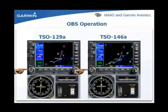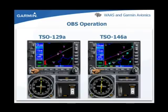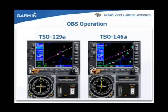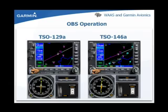Both the Classic and WAAS GNS units will enter OBS mode, enunciated by the green OBS above the OBS key. Prior to reaching the VOR for the hold, ATC amends the clearance with instructions to proceed with the GPS Runway 2-2 approach. To begin auto-sequencing again in both the Classic and WAAS GNS units, press the OBS key.